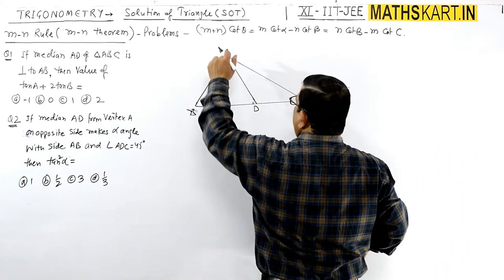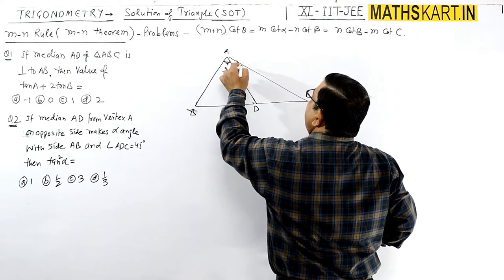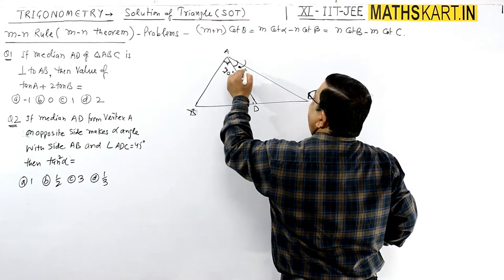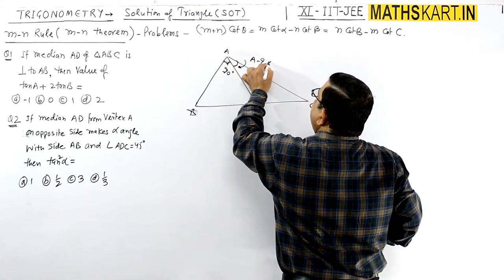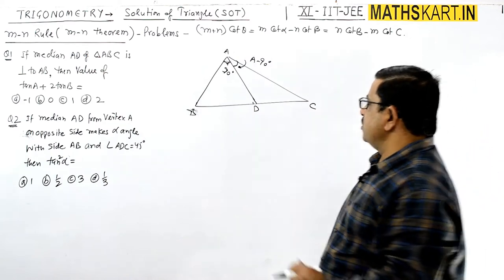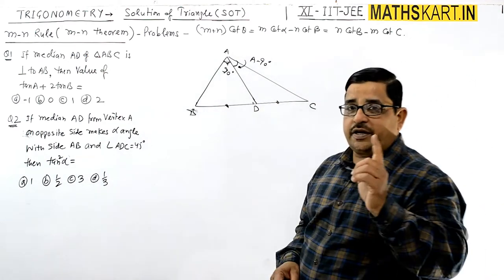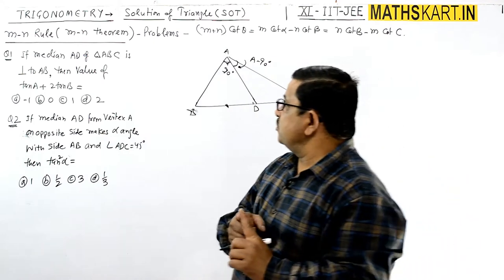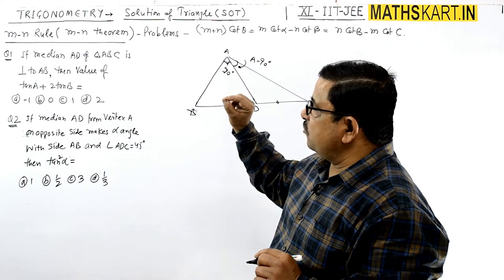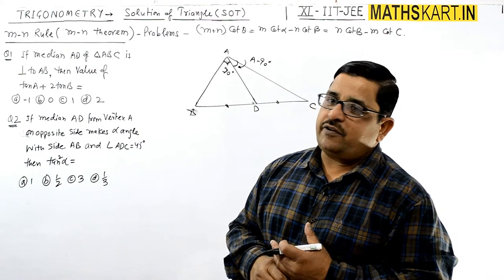If the total angle is 90 degrees, then we can directly write this angle as A minus 90 degrees. And since AD is the median, BD equals DC. So the median is perpendicular to AB and we require the value of tan(A) + 2·tan(B).